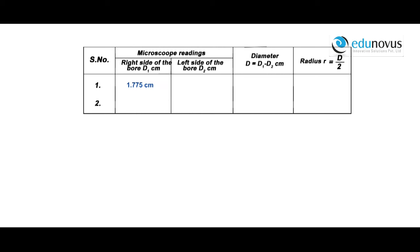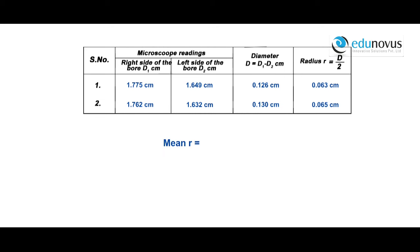The traveling microscope reading when focused on the right end of the bore is 1.775 cm, and when focused on the left end is 1.649 cm. The difference gives the diameter of the bore as 0.126 cm, and half of it gives radius r = 0.063 cm. For the second readings, mean r = (r1 + r2)/2 = (0.063 + 0.065)/2 = 0.064 cm.